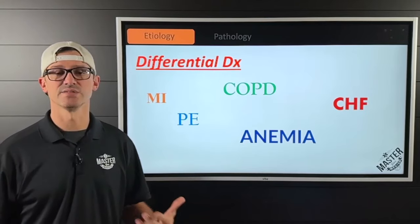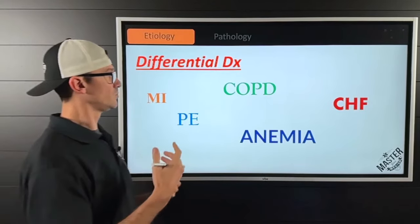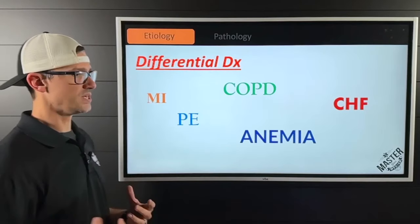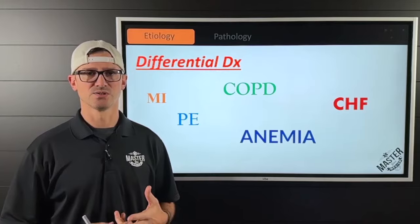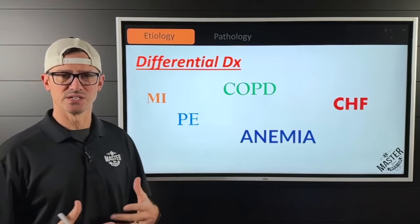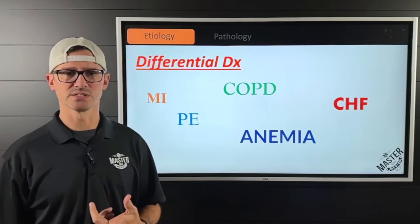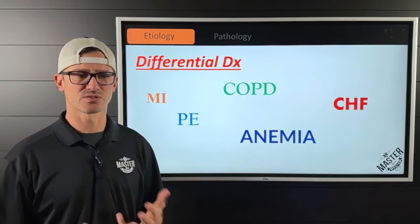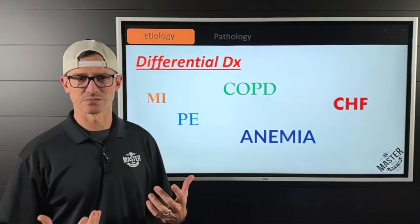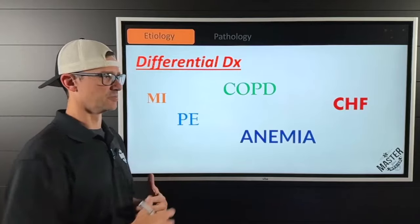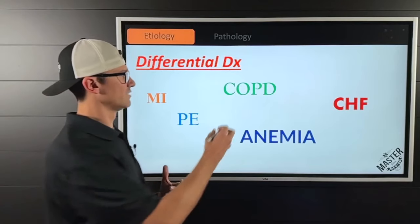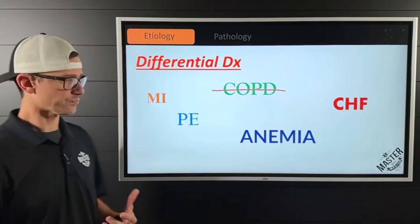Starting with the differential diagnosis, let's look at the respiratory cluster. Maybe it's a PE, COPD, or CHF. With COPD — generally emphysema or bronchitis — you'd expect wheezing or gas exchange issues, which would be in the history. This patient didn't present with wheezing. They have a history of asthma, and the only respiratory medication was that inhaler, so we're kind of ruling out COPD. They didn't present as a blue bloater or pink puffer, so we're ruling out COPD at this time.